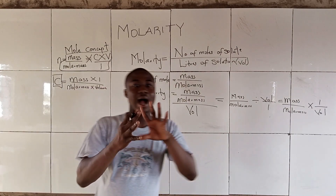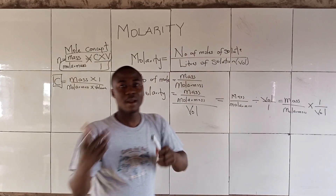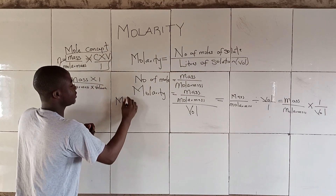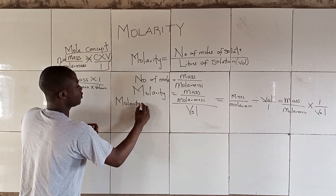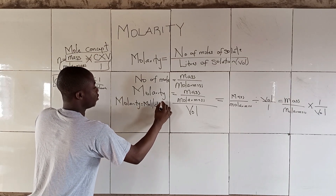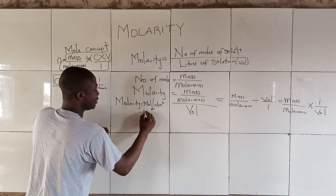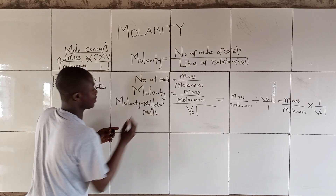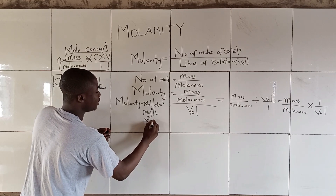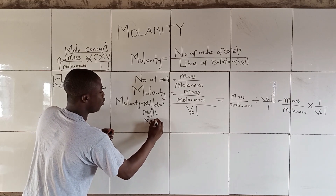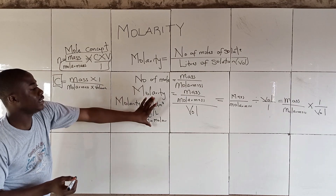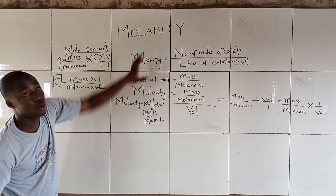We can therefore conclude that Molarity and concentration are the same, and their SI unit is mol per dm³, or mol per liter, or simply capital M, which stands for molar.